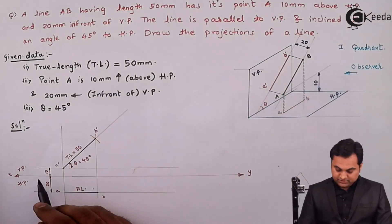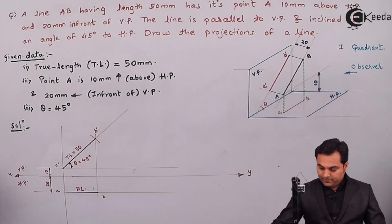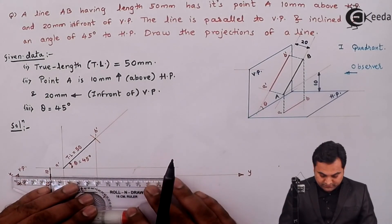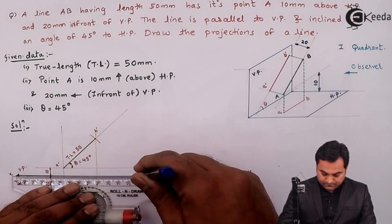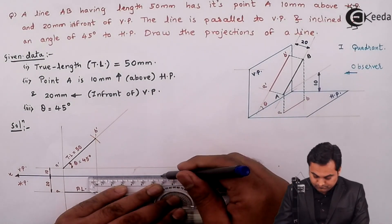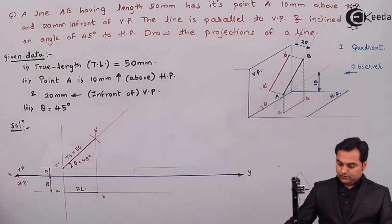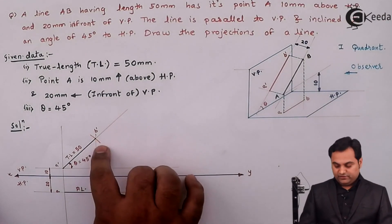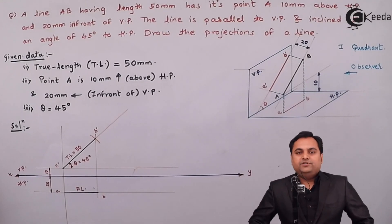These distances are 10 mm above HP and 20 mm in front of VP — that is from the XY line. These are the projections of the line: this is the front view and here is the top view. With this, the problem gets completed.